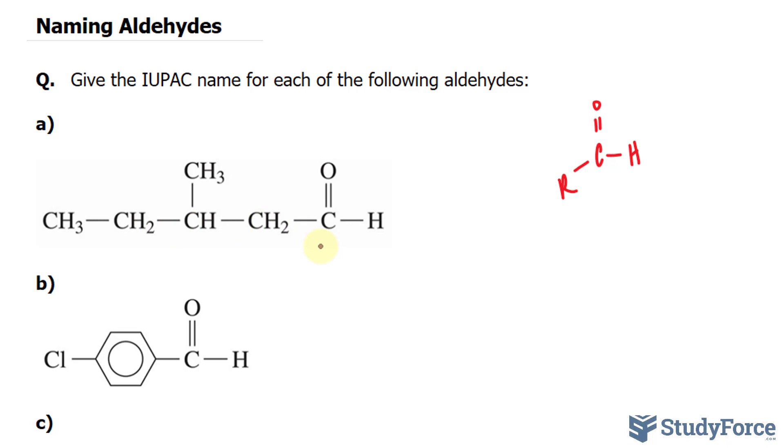Normally, if this weren't an aldehyde, we would just call it pentane because it's an alkane, except here we have this double bonded oxygen so we know it's an aldehyde and we drop this E and we write down AL. So so far we have pentanal.